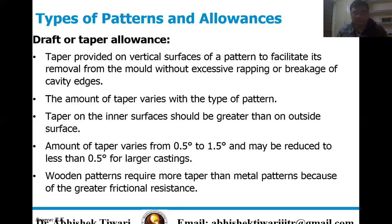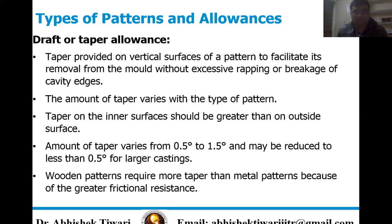Next is draft or taper allowance. This is the taper provided on vertical surfaces of a pattern to facilitate its easy removal from the mold without excessive rapping or breakage of cavity edges. The amount of taper varies with the type of pattern. The taper on inner surfaces should be greater than on outer surfaces. The amount of taper varies from 0.5 degree to 1.5 degree and may be reduced to less than 0.5 degree for larger castings. Wooden patterns require more taper than metal patterns because of greater frictional resistance.